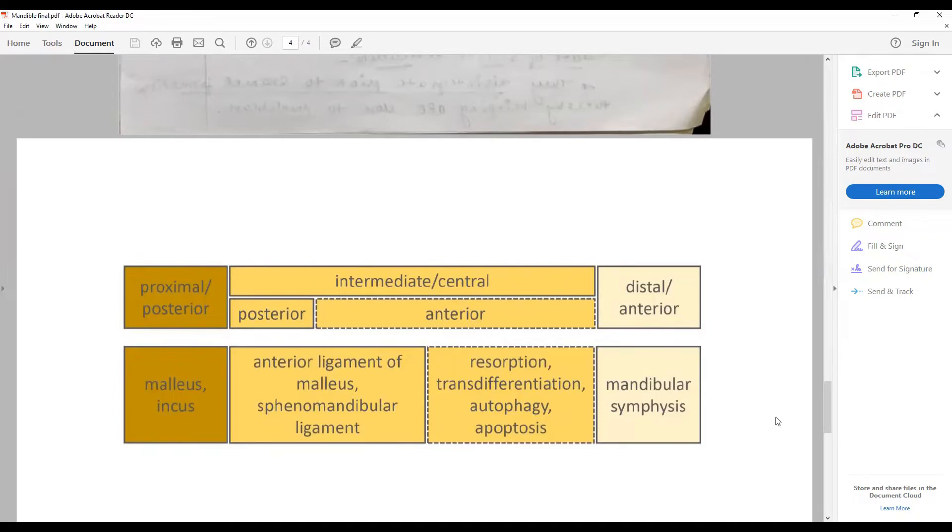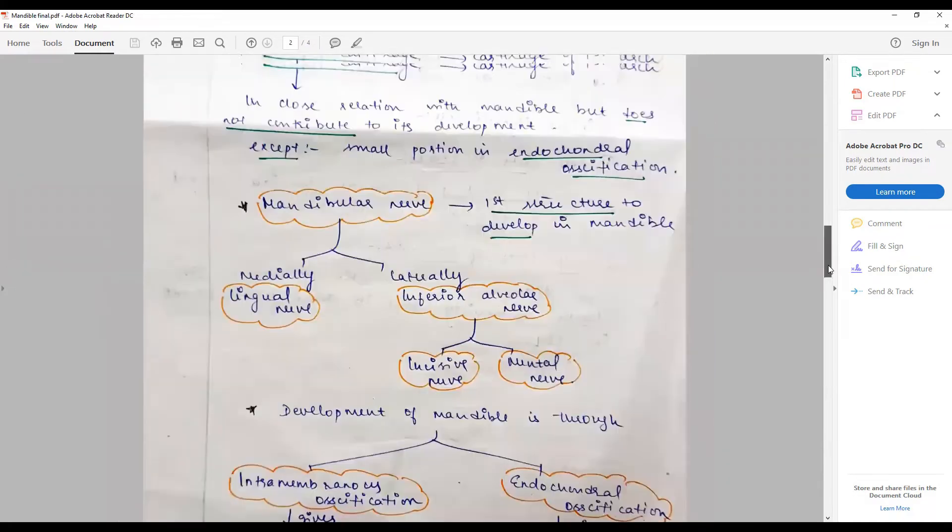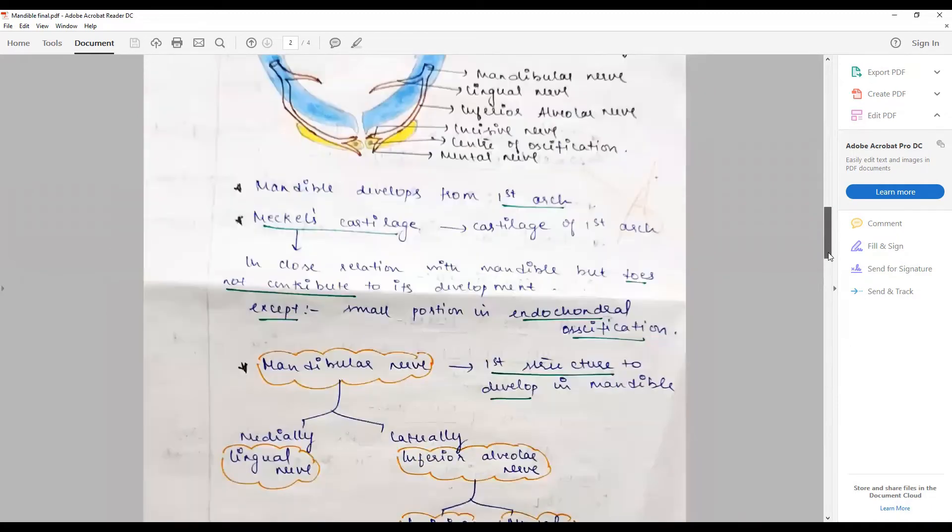The anterior part contributes to mandibular symphysis in a small segment. That portion is the endochondral ossification.